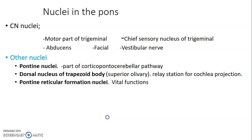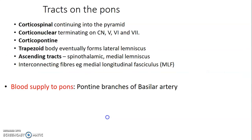Other nuclei in the pons include the pontine nuclei, which form part of the corticopontocerebellar pathway; the dorsal nucleus of the trapezoid body, which is a relay station for cochlear projections; and the pontine reticular formation nuclei, which control vital functions including cardiorespiratory and somatic functions.